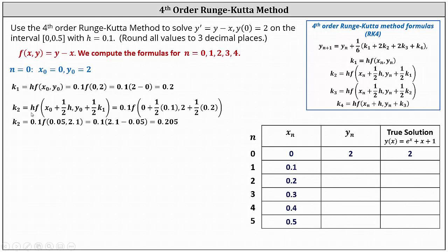For k sub 2, we have k sub 2 equals h times f of x sub 0 plus one-half h comma y sub 0 plus one-half k sub 1, where h is 0.1, x sub 0 is 0, y sub 0 is 2, and k sub 1 is 0.2. Simplifying, we have 0.1 times f of 0.05 comma 2.1, giving us 0.1 times the difference of 2.1 and 0.05, which equals 0.205.